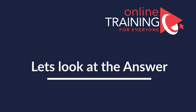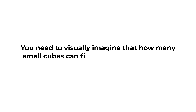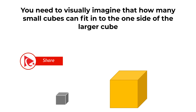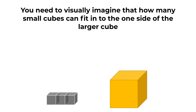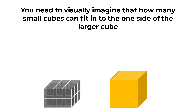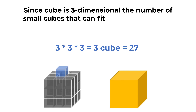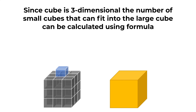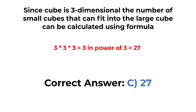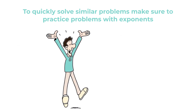To solve this, visually imagine how many small cubes can fit along one side of the larger cube — the answer is three. Since a cube is three-dimensional, the total number of small cubes that can fit is 3 × 3 × 3 = 3³ = 27. So the correct choice here is choice C, 27.